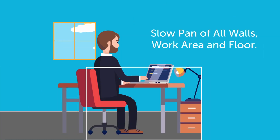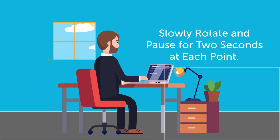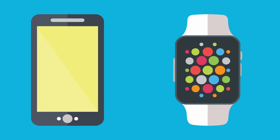If you are using an external camera, you will slowly rotate the camera and pause at each wall for two seconds before slowly rotating to the next. If you are on a laptop, you will simply pick it up and follow the same instructions. You will be asked to show your cell phone and put it away before the exam is started.